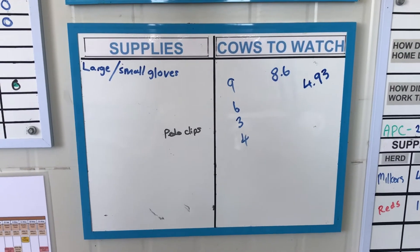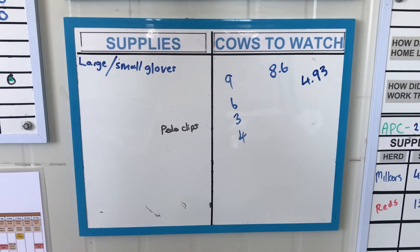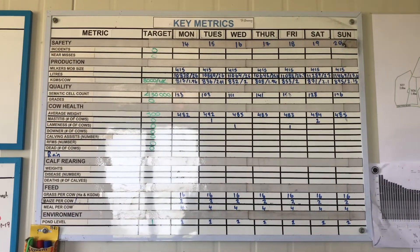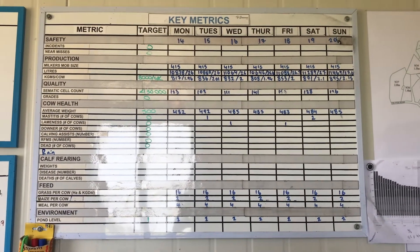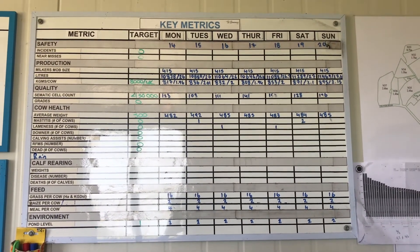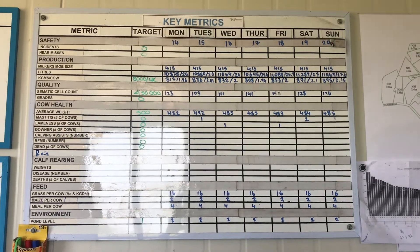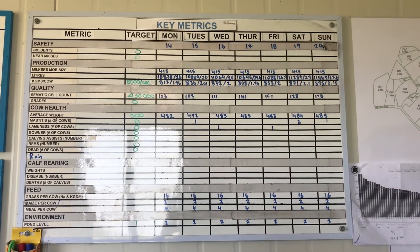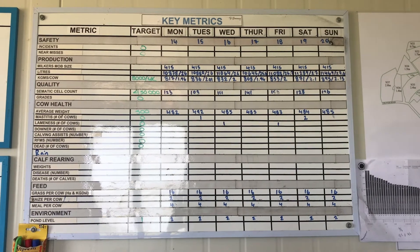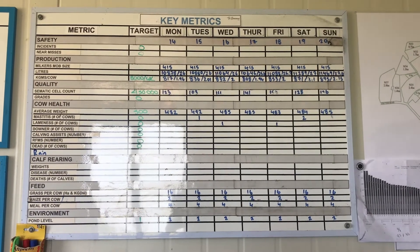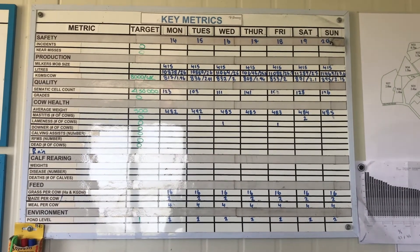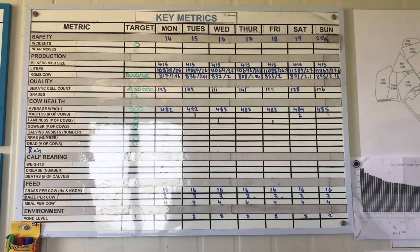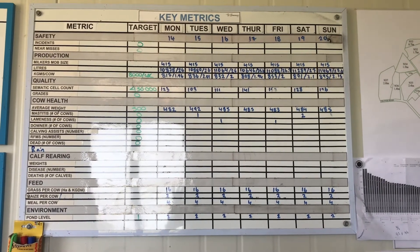Another section that we have here is the supplies and cows to watch area. Then there is our key metrics. This is all our key things that we want to be tracking, and the team have totally taken ownership of this. They capture all the data and they update this on a weekly basis, and it means that everyone knows where we're at in terms of all of our key metrics.